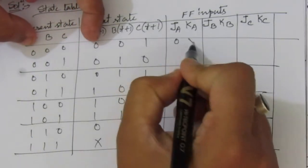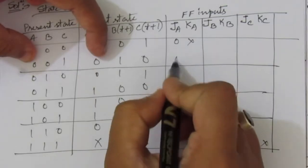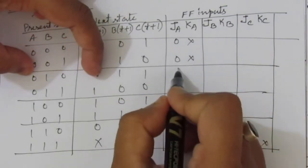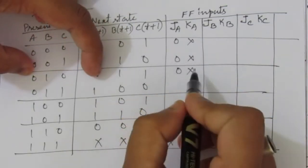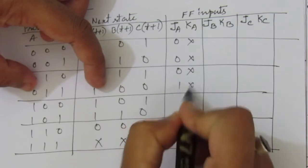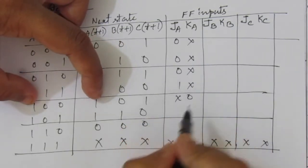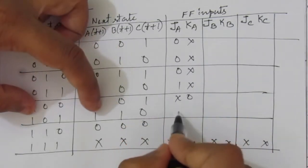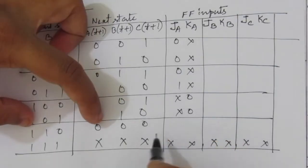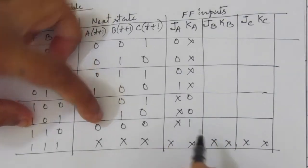Applying this to fill in the JA and KA columns: for the rows where A goes 0→0, we get J=0, K=don't care; for 0→1 we get J=1, K=don't care; for 1→1 we get J=don't care, K=0; and for 1→0 we get J=don't care, K=1.